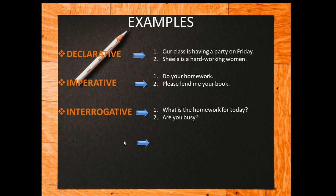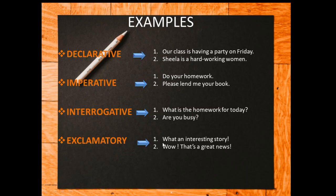And the last type of sentence is exclamatory sentence. The first example: 'What an interesting story!' — it's a sudden feeling expressed after reading a story. It starts with a capital letter and ends with an exclamation mark. Second example: 'Wow, that's great news!' — 'wow' expresses a sudden, abstract feeling and has an exclamation mark at the beginning, and 'that's great news' is followed by another exclamation mark. So these sentences are nothing but exclamatory sentences.